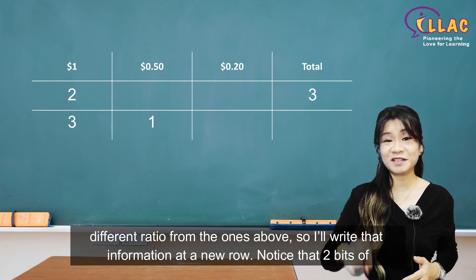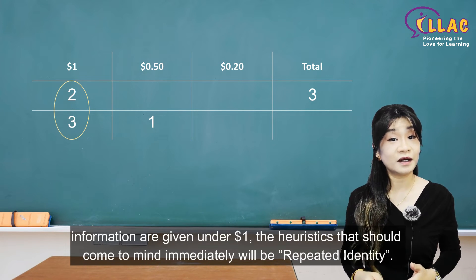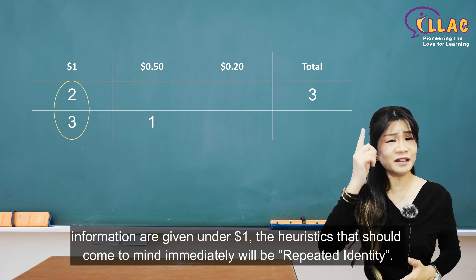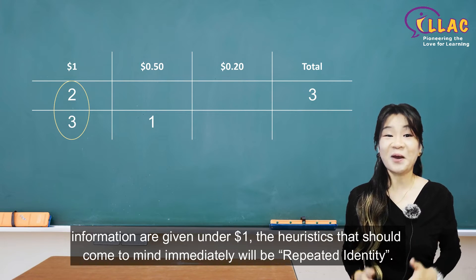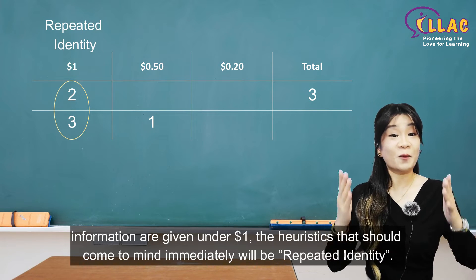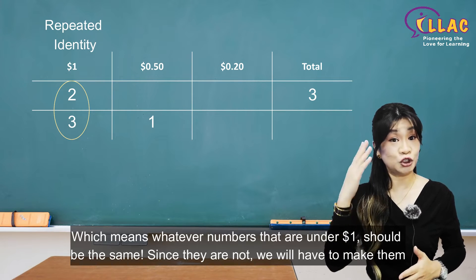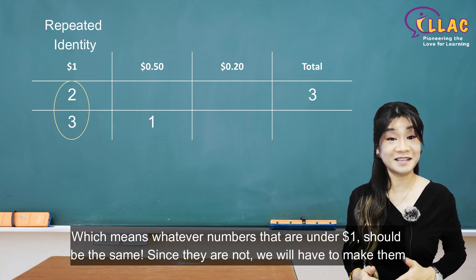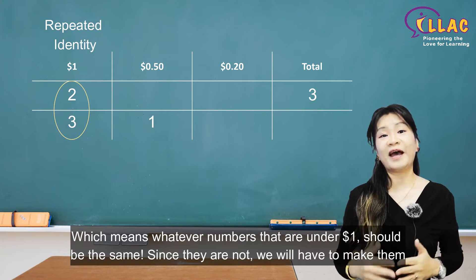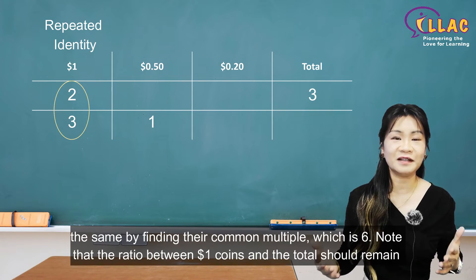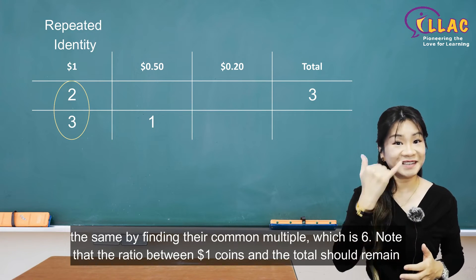Notice that two bits of information are given under $1. The heuristic that should come to mind immediately is repeated identity, which means whatever numbers are under $1 should be the same. Since they are not, we will have to make them the same by finding their common multiple, which is 6.